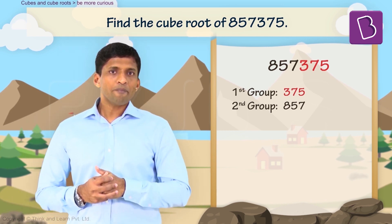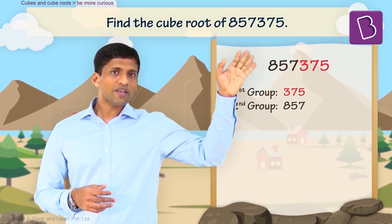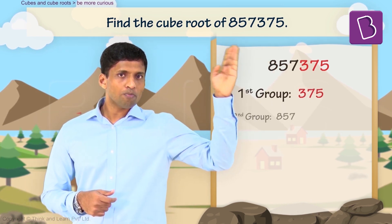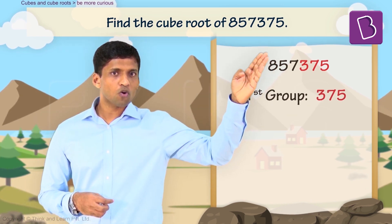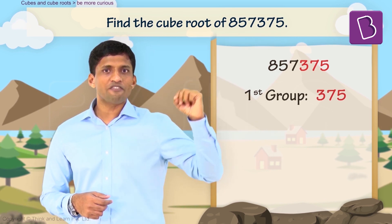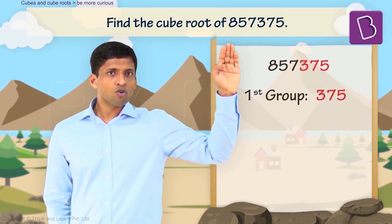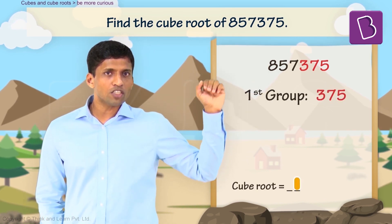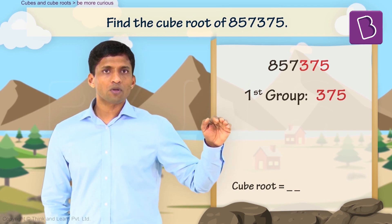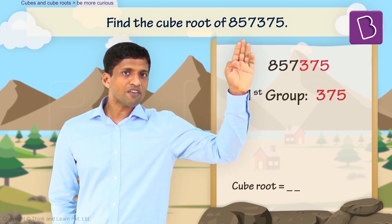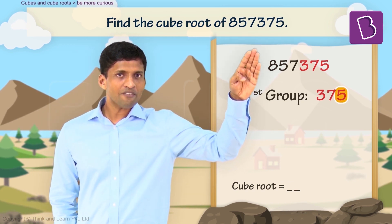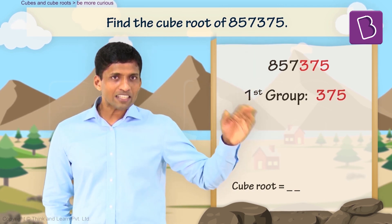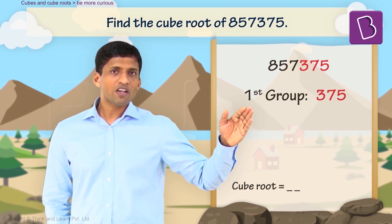In the second step, we first consider the rightmost group. In this case, the first group is 375. By observing this, we can find the unit digit of the cube root. Here, 375 has unit digit 5, so the unit digit of the cube root has to be 5.